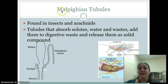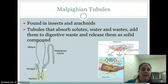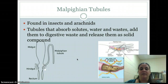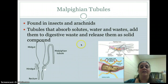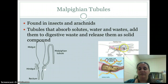Now we get to the Malpighian tubules, found in insects and arachnids mostly. There's a little tube that comes off of the gut — these tubes absorb solutes, water, and cellular waste products. The difference here is that these wastes are added to the digestive waste and then released as a solid compound. So it comes out of the rectum of the insect — they essentially poop it out.